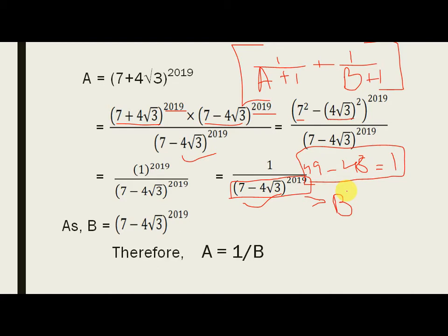Now, usually in such questions, when you have the two rationalizing factors given, then you try finding some relations between them. You try multiplying them or try putting one in terms of the other.